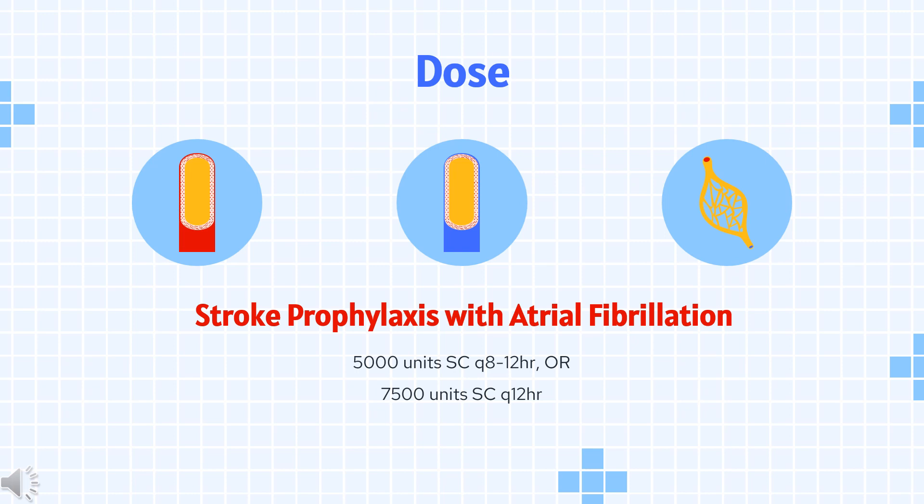STEMI — Patient on fibrinolytics: IV bolus of 60 units/kg (max 4,000 units), then 12 units/kg/hr (max 1,000 units/hr) as continuous infusion. Dose should be adjusted to maintain APTT of 50–70 seconds.